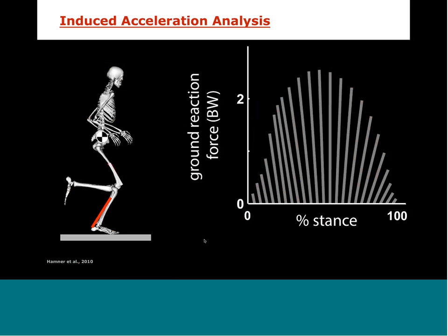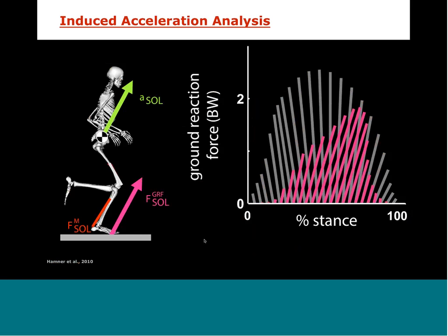After gaining confidence in the predicted activations and forces, Sam performed an induced acceleration analysis to determine the contribution of each muscle to the acceleration of the center of mass. A muscle — say the soleus — generates a force, creating a reaction force between the foot and the ground that accelerates the center of mass. The graph shows results for the soleus: the muscle is supporting the body and propelling it forward during the stance phase of running. When you sum up all contributions of each muscle, you should get the total acceleration of the center of mass or the ground reaction force — and Sam did indeed find this.